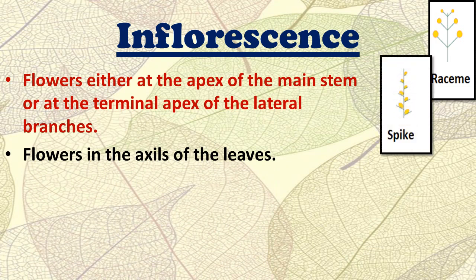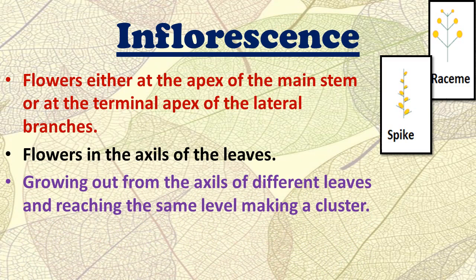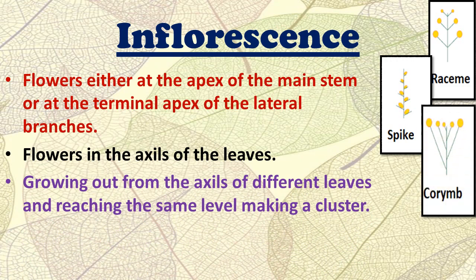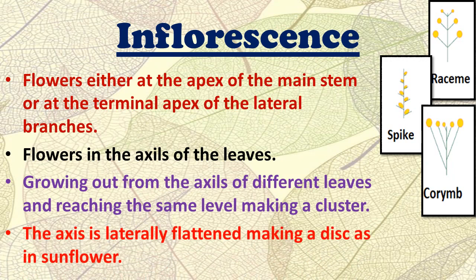The next type is spike inflorescence, in which the flowers are arranged in the axils of the leaves. The third type is corymb inflorescence, where flowers grow out from the axils of different leaves and reach the same level, making a cluster.